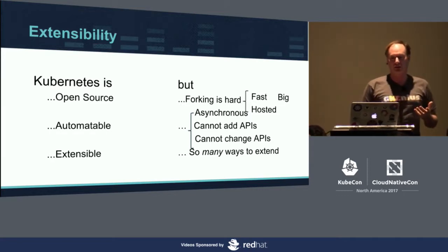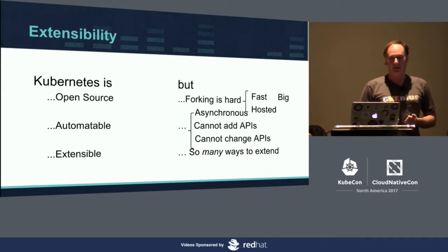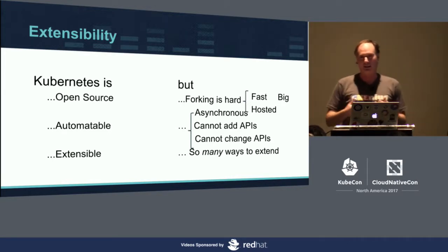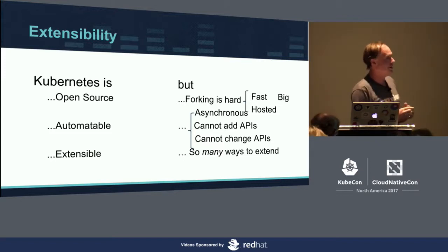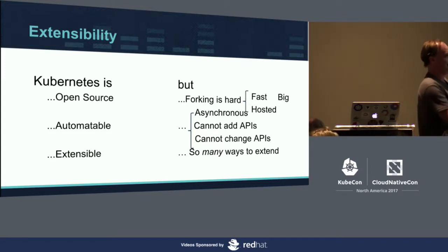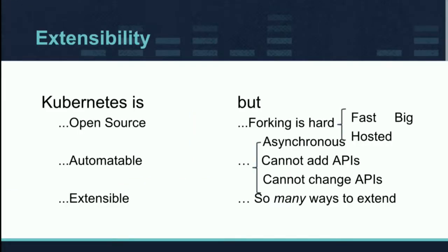I tried to come up with a short definition of what it means to be using extensibility in Kubernetes — what's an extension and what's not — and actually couldn't fit one in a sentence. Let me start by talking about what Kubernetes is and what isn't extending Kubernetes. Kubernetes is open source, so you always have the option of forking it, but that's hard. The project's moving really fast, the code base is really big, and it's hard to figure out where the point is you want to extend things.